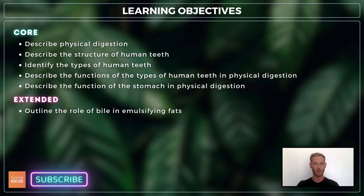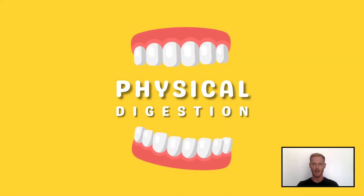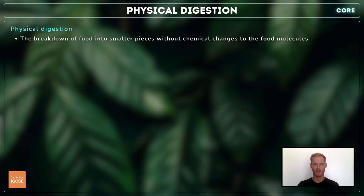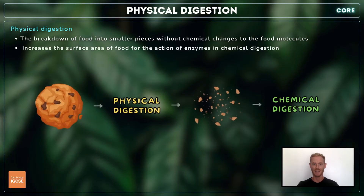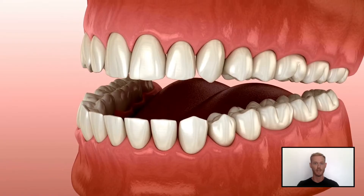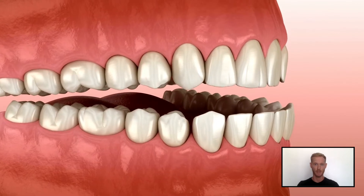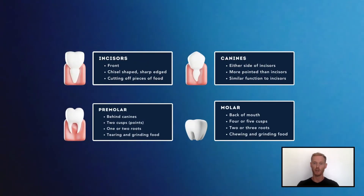In our last lesson, we learned about the organs of the alimentary canal and their functions. In this one, we'll expand and go into a little more detail on physical digestion. Physical digestion is the breakdown of food into smaller pieces without chemical changes to the food molecules. This serves to increase the surface area of food for the action of enzymes in chemical digestion, which we'll cover in detail in topic 7.4. Physical digestion mainly occurs in the mouth, where teeth are used to chew food into smaller pieces, passed onto the stomach as a bolus, and broken down further by enzymes.